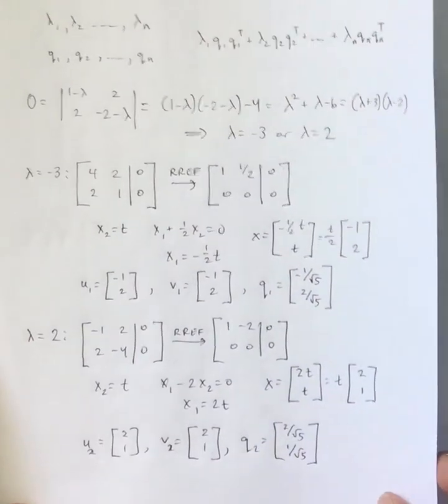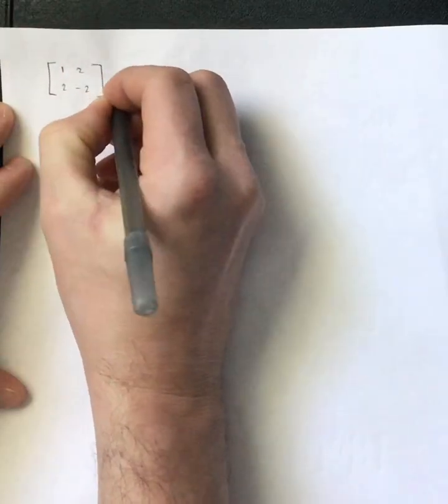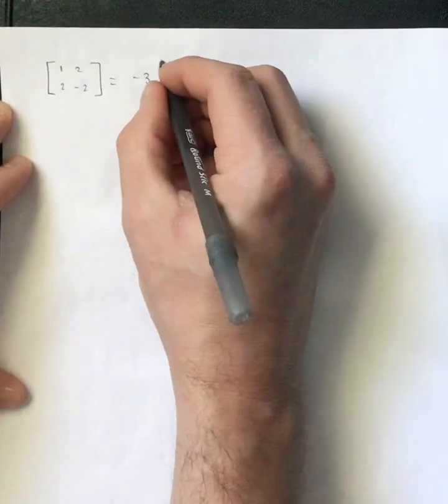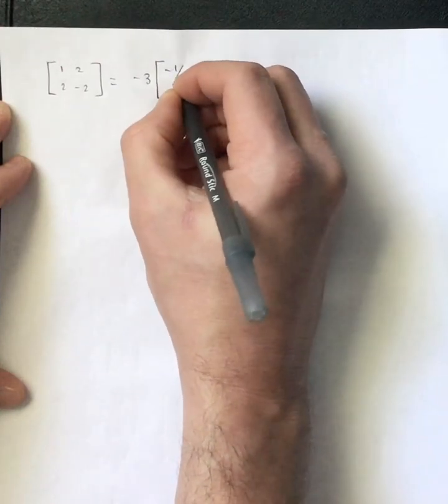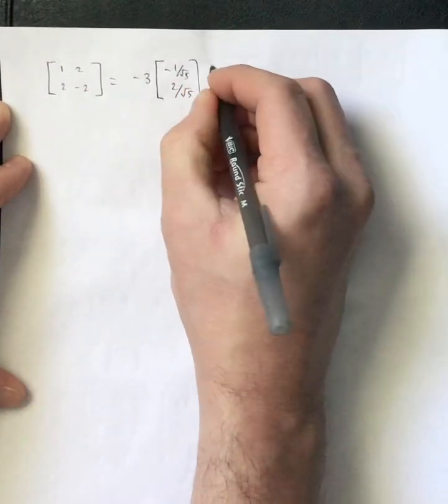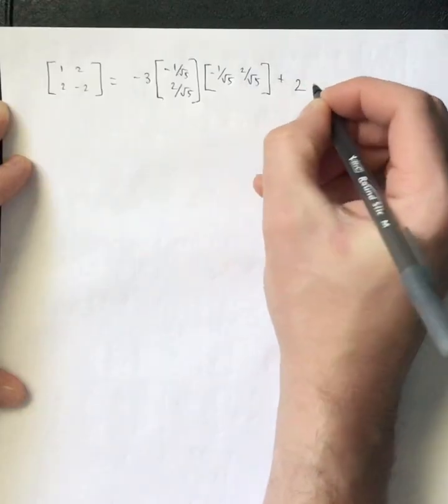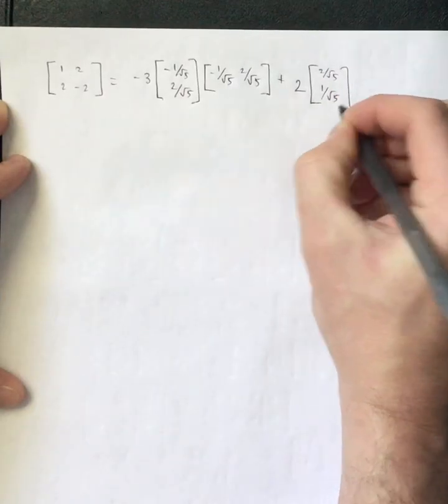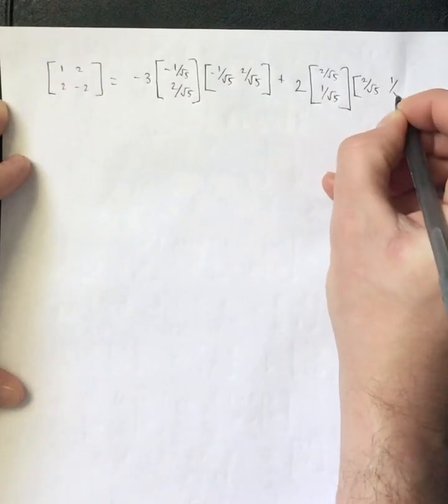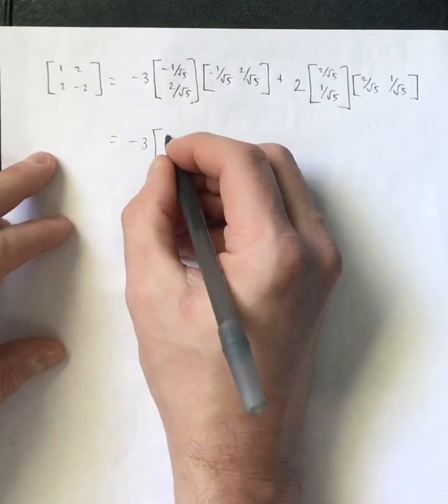So now that we have the Qs, let's go ahead and find that decomposition. So the decomposition for this matrix. Remember, it should have negative 3 as one of the coefficients. And in fact, negative 1, 2 was the, or sorry, negative 1 over root 5, 2 over root 5 was the vector. So then we're going to multiply by its transpose. And we're going to do a similar thing for lambda equals 2. We're going to multiply that by 2 over root 5, 1 over root 5. And then that by its transpose.